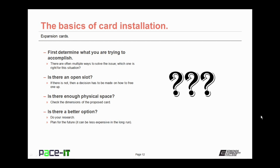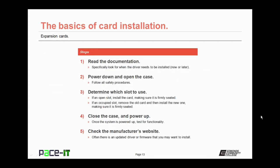Now for the physical steps. Step one: read the documentation that comes with the card — specifically look for when the driver needs to be installed, whether before or after inserting the card. Step two: power down and open the case, making sure to follow all safety procedures. Step three: determine which slot you're going to use. If there's an open slot, install the card making sure it is firmly seated. If replacing an existing card, remove the old one, install the new one firmly, then close up the case and power up.